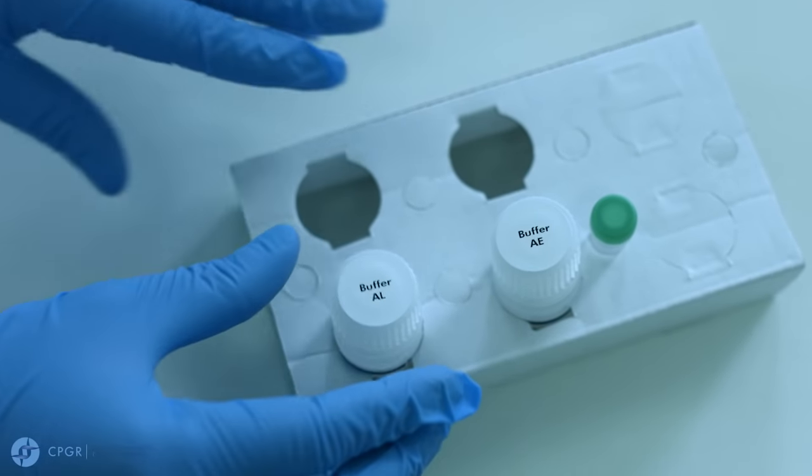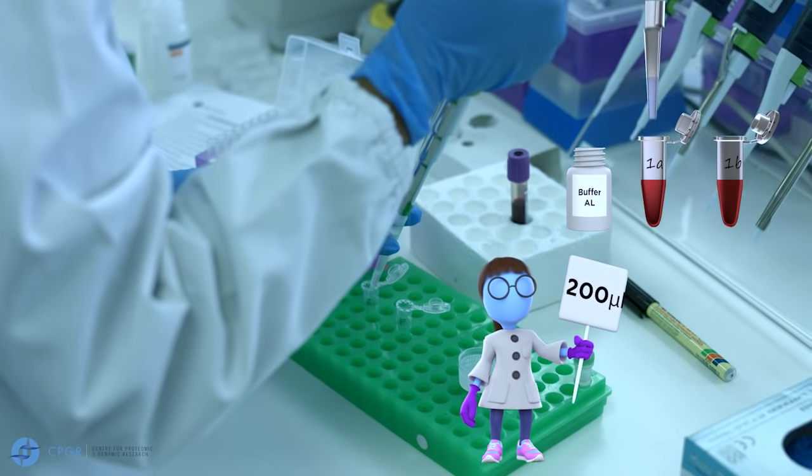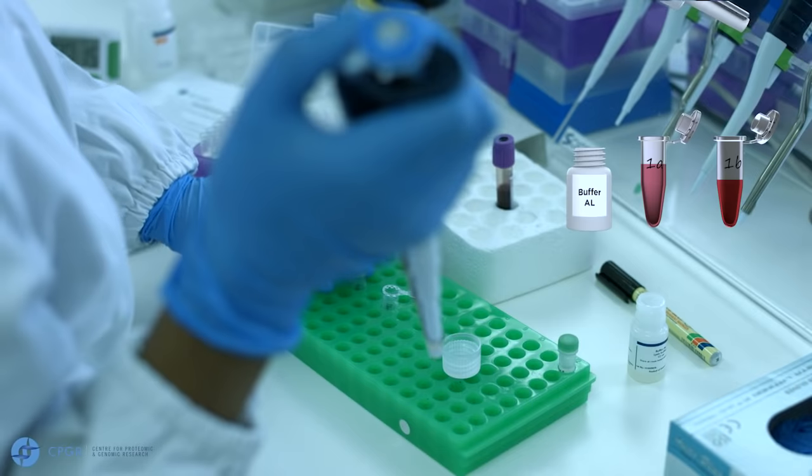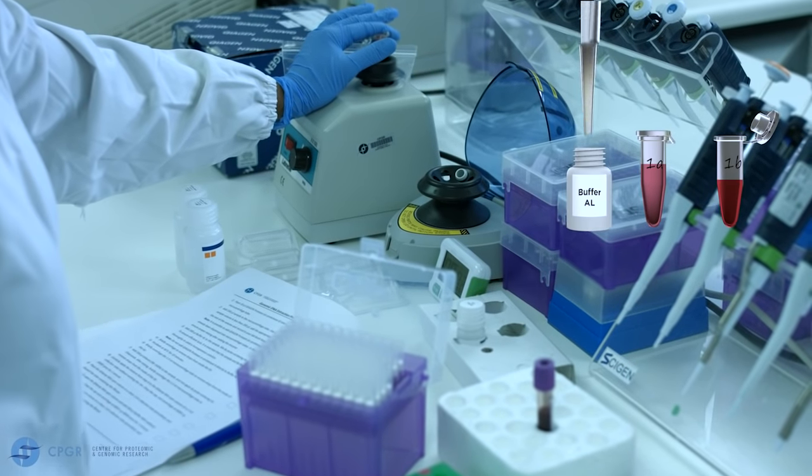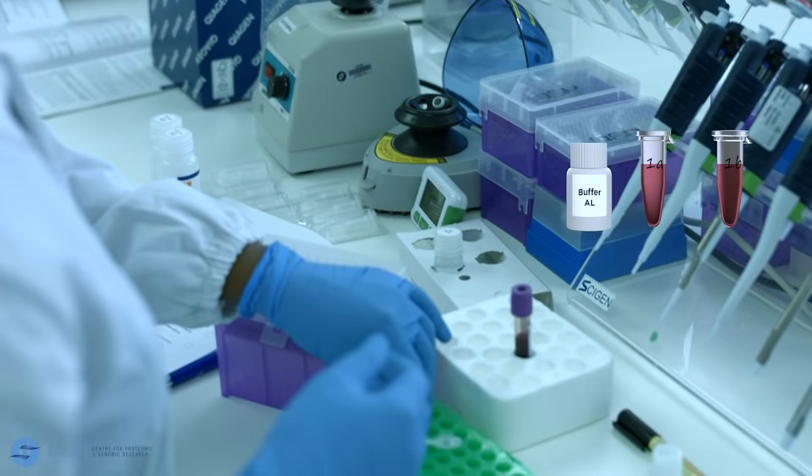Add 200 microliters of buffer AL to each sample. Close the tube and vortex for about 15 seconds and this step will be repeated for all subsequent samples.